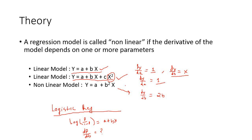Having a square or cube term of the independent variable does not make the model nonlinear. Even though if you plot it, it looks nonlinear, by definition it is not. The third equation — y = a + b²x — is a nonlinear example. When you take dy/da you get 1, which is fine, but when you take dy/db you get 2b, and b is a parameter. So the derivative with respect to b depends on the parameter b, making this a nonlinear regression model.